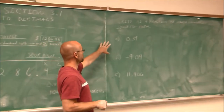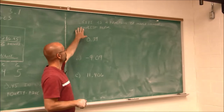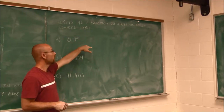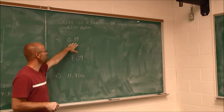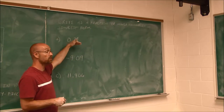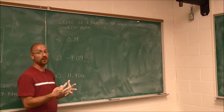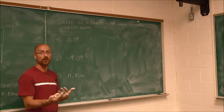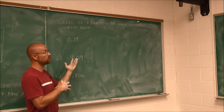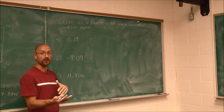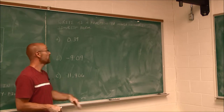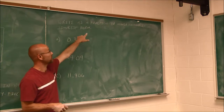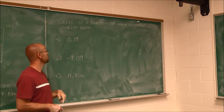Let's look at these three examples: write as a fraction or a mixed number in simplest form. What a decimal is, is another way to represent parts of a whole — that's what we use fractions for. So decimals and fractions are interchangeable, and we can do this by knowing their place values.